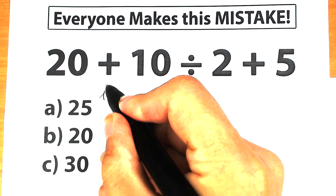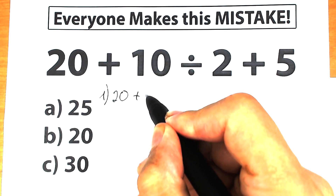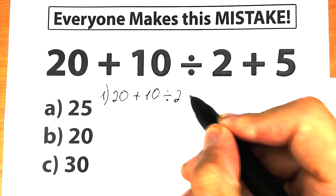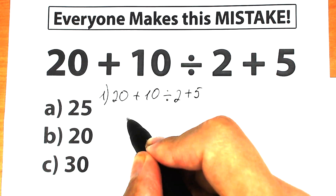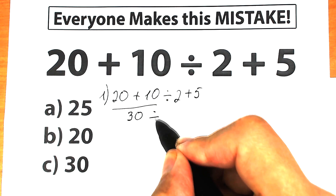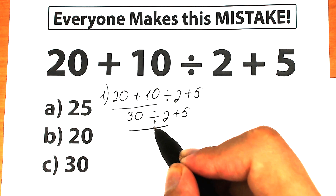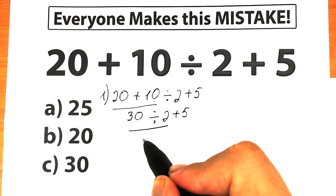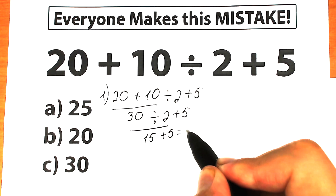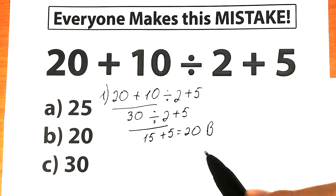So first of all I want to start with this first interpretation, because a lot of students solve this challenge like that. We have 20 plus 10 divided by 2 plus 5, and they say okay, in strict order from left to right: 20 plus 10 equals 30, then 30 divided by 2 equals 15, and 15 plus 5 equals 20. A lot of students get this option — yes, this is Option B.